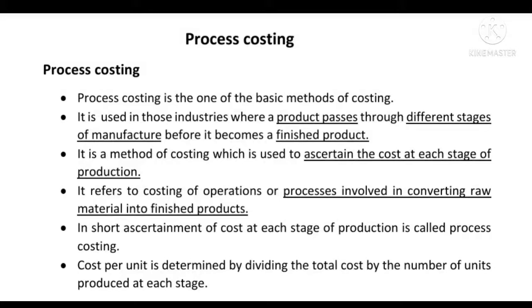Process Costing is one of the basic methods of costing. It is used in those industries where a product passes through different stages of manufacture before it becomes a finished product. It is a method of costing used to ascertain the cost of each stage of production. It refers to costing of operations or processes involved in converting raw materials into finished goods. In short, ascertainment of cost at each stage of production is called Process Costing.